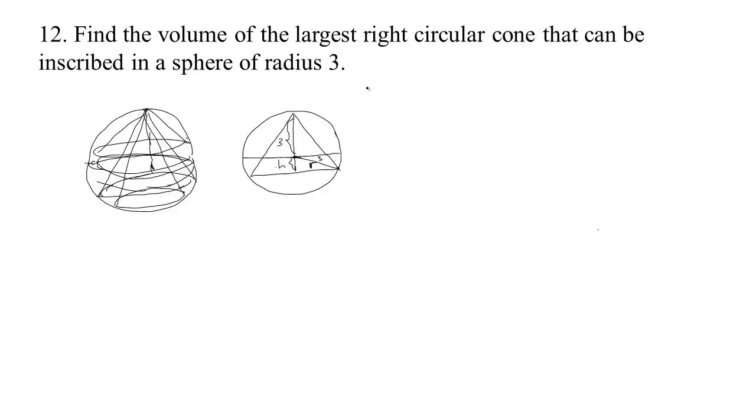The thing we're trying to optimize is the volume, because we want the largest volume, right? And the volume of a cone is 1/3 π r squared H. Now, the height actually is 3 plus H, the way I've labeled this thing. So, 1/3 π r squared times 3 plus H. There's the volume of our cone.